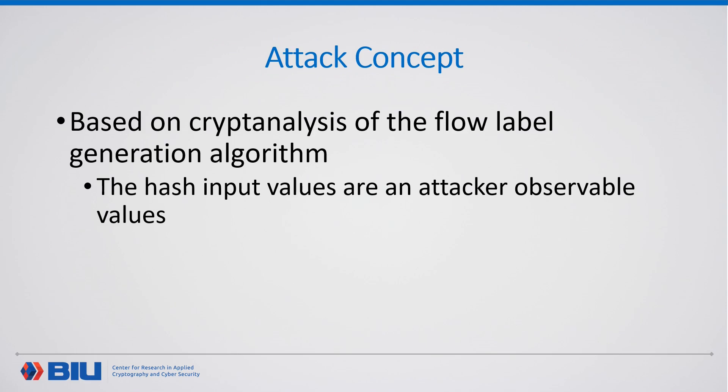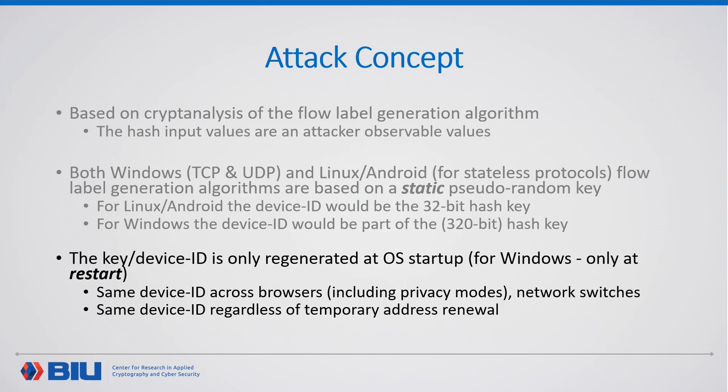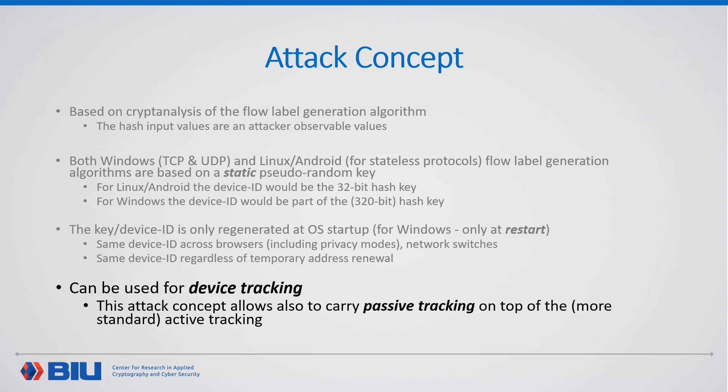For the attack concept: all the hash input values of the algorithms we have just seen are attacker-observable values. Both Windows for TCP and UDP, and Linux and Android for stateless protocols, use a static key. So this key, or parts of it, might be used as a device ID. Furthermore, the key is regenerated only on restart. And because this key is static, a device ID based on this key would be the same device ID across browsers, regardless of network switches or temporary address renewals. These conditions make it perfect for device tracking. Interestingly, this concept also allows an attacker to carry out passive tracking, which we will describe later.